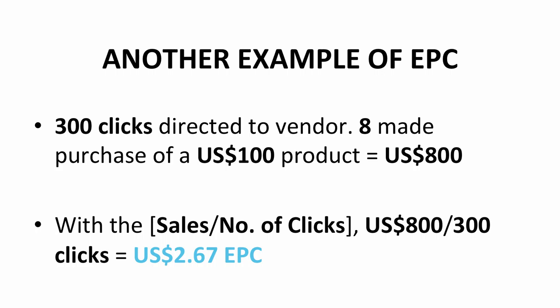Let's go through it with another example. If you direct 300 clicks to the vendor website through your affiliate links, and 8 of them make a purchase of a $100 product, your sales would be $800. With the EPC formula — sales divided by number of clicks — you have $800 divided by 300 clicks. After dividing, you get $2.67. That amount is the EPC.